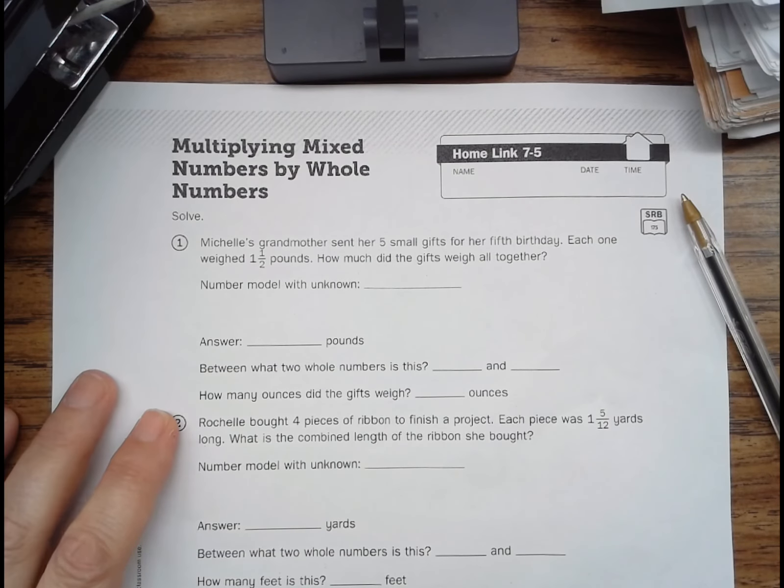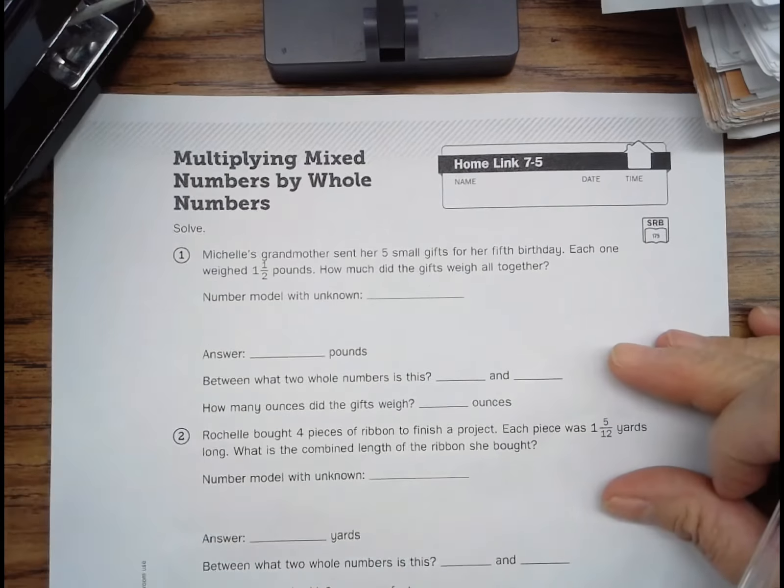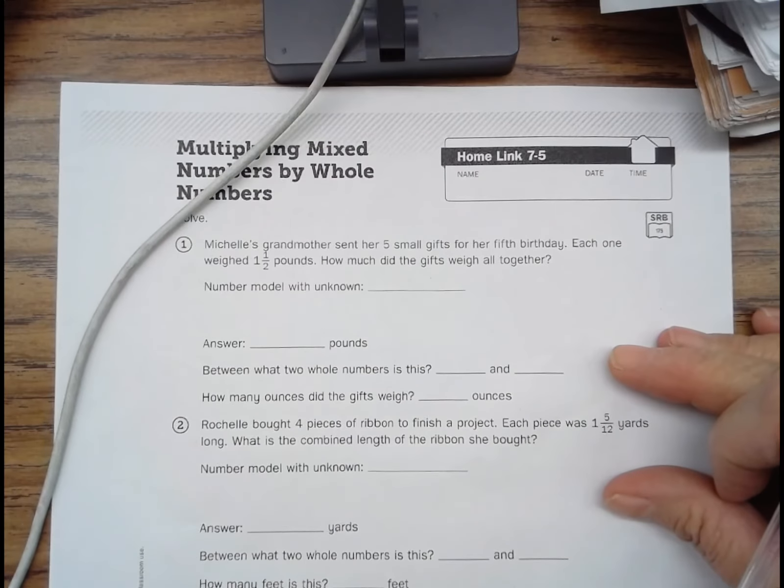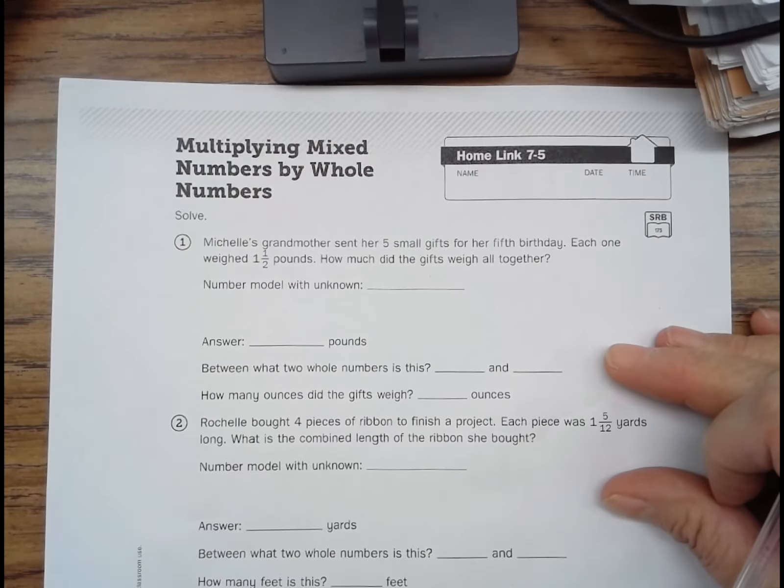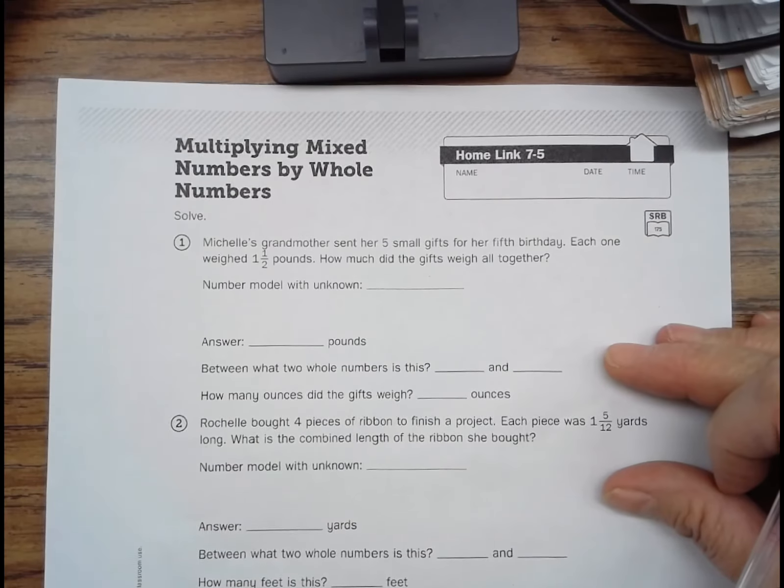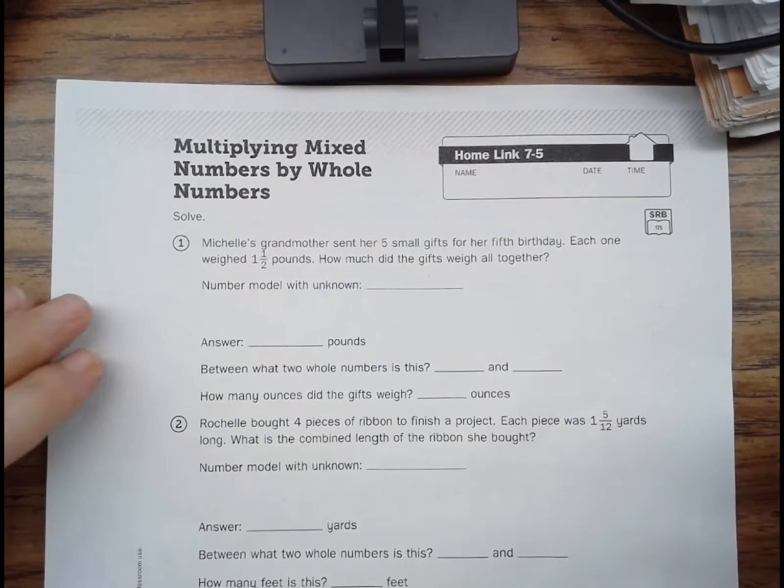Hi boys and girls, this is Miss Christy, and this is the video for our homework for tonight. It's Homelink 7-5, Multiplying Mixed Numbers by Whole Numbers. I'll move that out of the way.